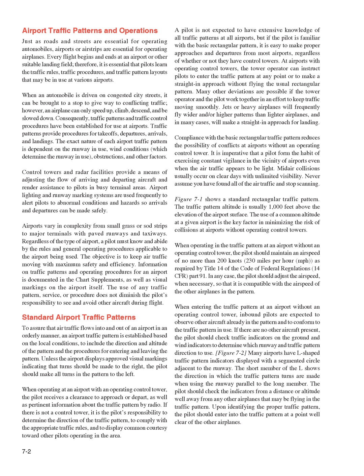At airports with operating control towers, the tower operator can instruct pilots to enter the traffic pattern at any point or to make a straight-in approach without flying the usual rectangular pattern. Many other deviations are possible if the tower operator and the pilot work together to keep traffic moving smoothly. Jets or heavy airplanes will frequently fly wider and/or higher patterns than lighter airplanes, and in many cases will make a straight-in approach for landing. Compliance with the basic rectangular traffic pattern reduces the possibility of conflicts at airports without an operating control tower. It is imperative that a pilot form the habit of exercising constant vigilance in the vicinity of airports even when the air traffic appears to be light.